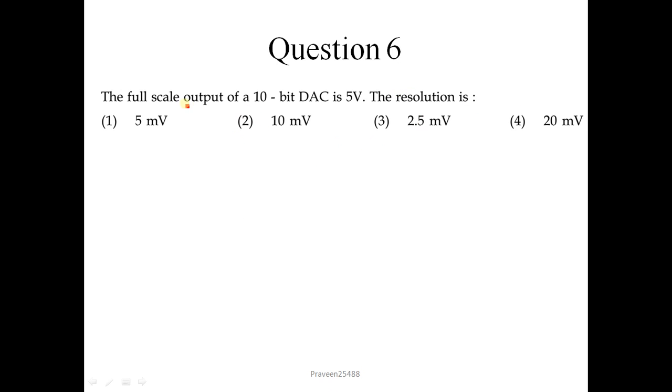Question number 6: The full scale output of a 10 bit digital to analog converter is 5 volt. The resolution is. We know the formula: full scale voltage upon the number of levels which is 2 to the power N, where N is the number of bits which is given 10. On solving, 5 upon 2 to the power 10 which is 1024, approximate it comes 5 millivolts. So correct option is 1.